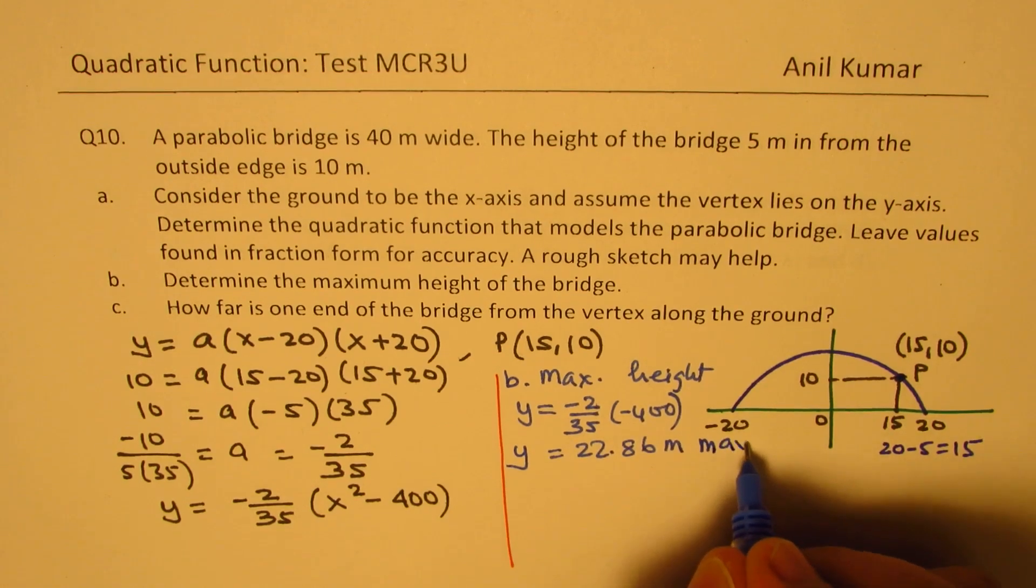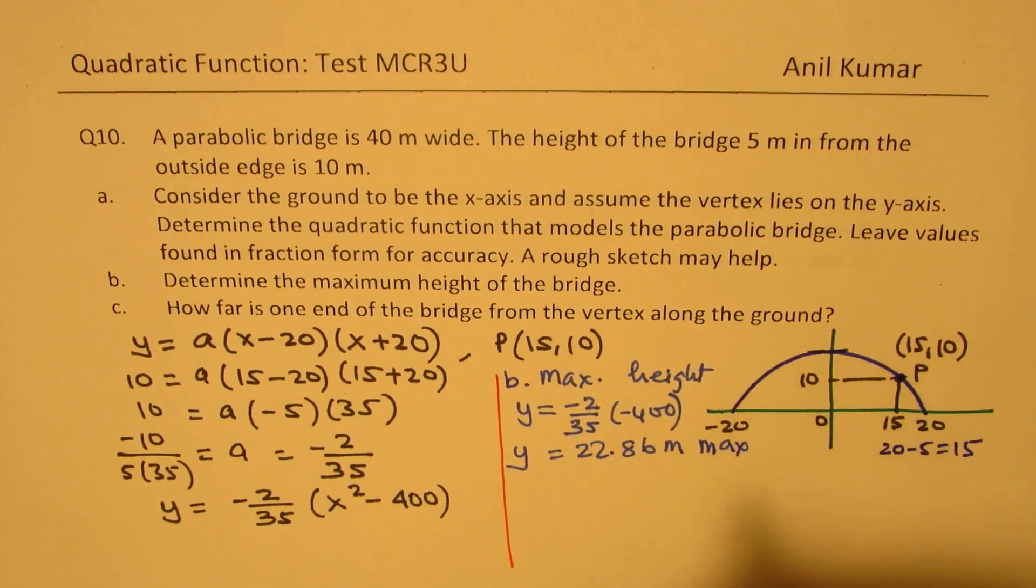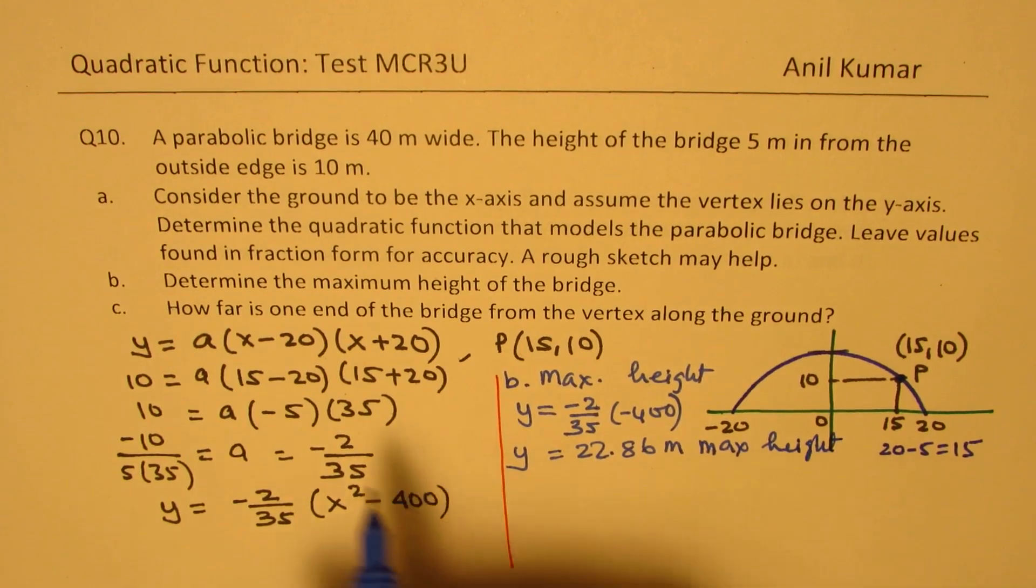So we have 800 divided by 35 in decimals. It is around 22.86 meters. So that is maximum height, this point.